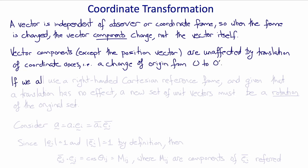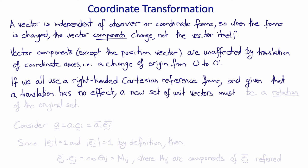If all observers agree to use a right-handed Cartesian reference frame, and given that a translation of the reference frame, a change of origin alone, has no effect, then a new set of unit vectors can only be a rotation of the original set of unit vectors.